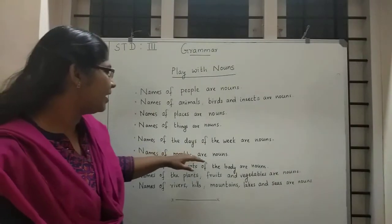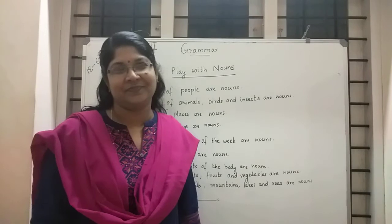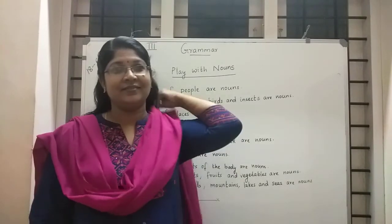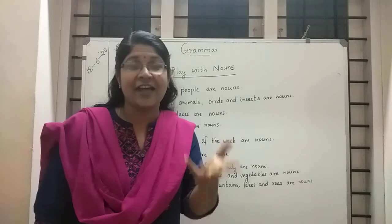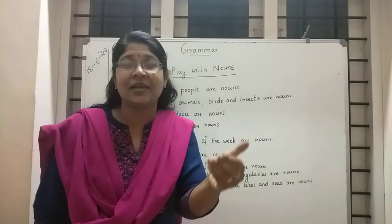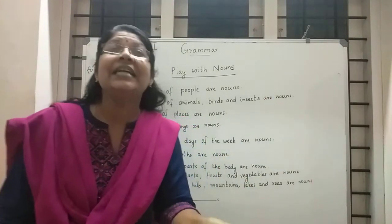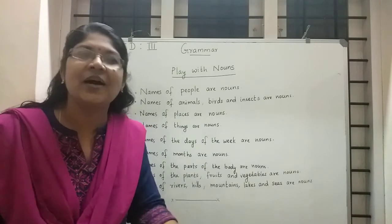Names of months are noun. How many months are there in a year? Twelve months — January, February, March, April, and so on till December. That is also noun.